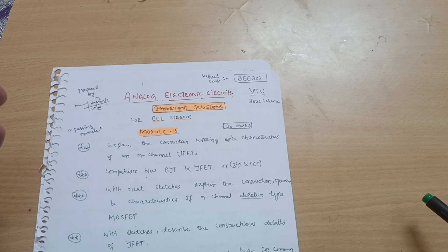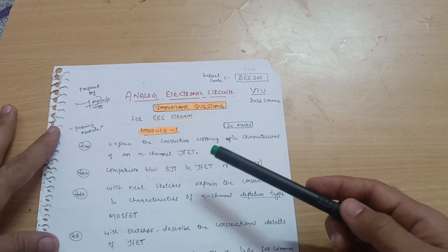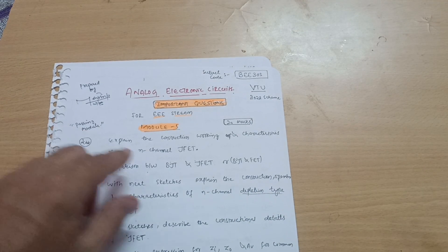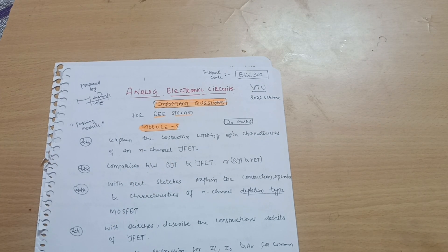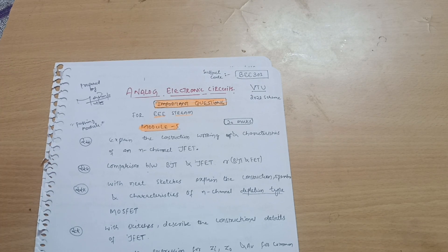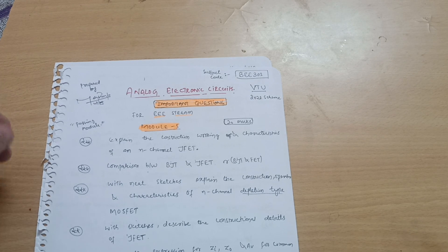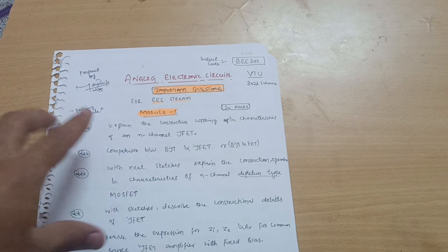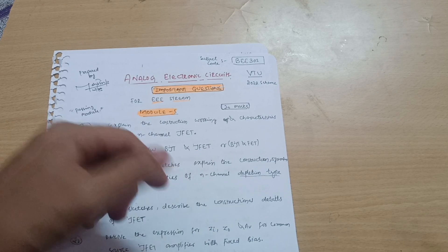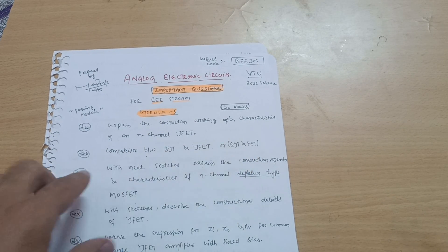Module 5 is the passing module — if you just cover the theoretical concepts there, you can easily gain 20 marks. The important questions are: explain the construction, working, and characteristics of an N-channel JFET. I have analyzed a lot of previous question papers; if you want those papers I will upload them on my Instagram account, the link is in the description. Next is comparison between BJT and JFET, or sometimes the difference between BJT and FET.